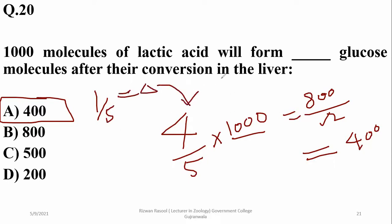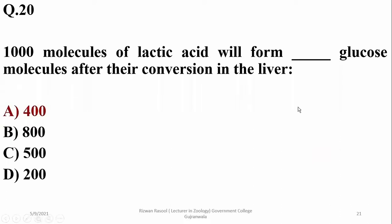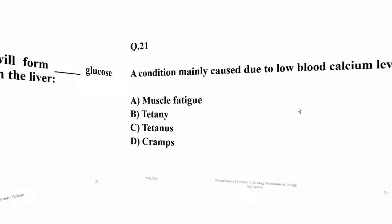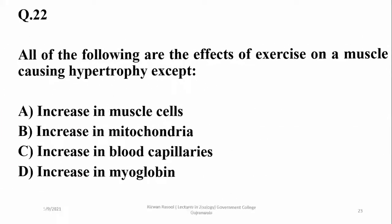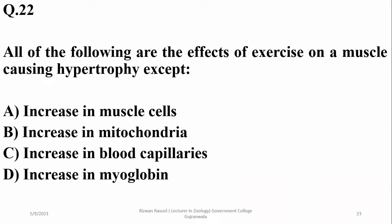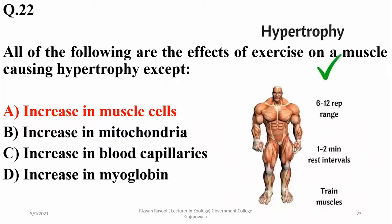A condition mainly caused by low blood calcium levels is muscle tetany, which is beta. Regarding effects of exercise causing hypertrophy, the exception is increasing muscle cell count — this is a wrong statement because muscle cells do not divide. However, mitochondria, blood capillaries, myoglobin, and reserves increase to cause an increase in muscle size during hypertrophy.